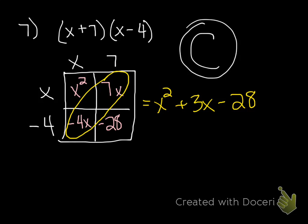I'm going to combine these like terms. My result is x² + 3x - 28, and that matches with letter C.